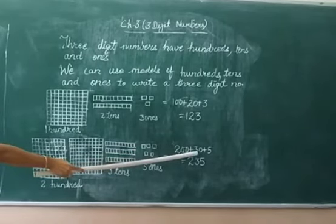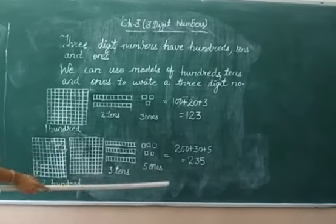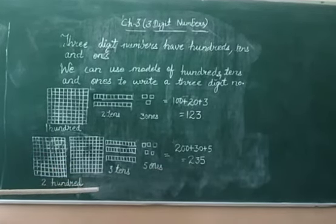2 hundreds, 3 tens, 5 ones. Add them up now, there are 235. That is equal to 235.